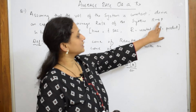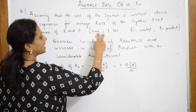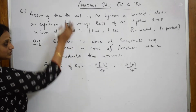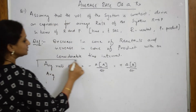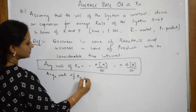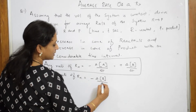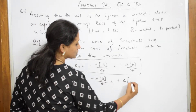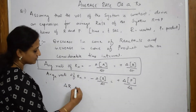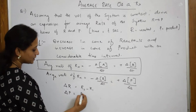The rate of a system — reactant converting to product — in terms of R and P: they want us to write in terms of R and P where we use time T. Average rate of reaction is equal to minus delta R divided by delta T, which is equal to plus delta P divided by delta T. Now delta R equals R2 minus R1 (final minus initial), and delta P equals P2 minus P1.